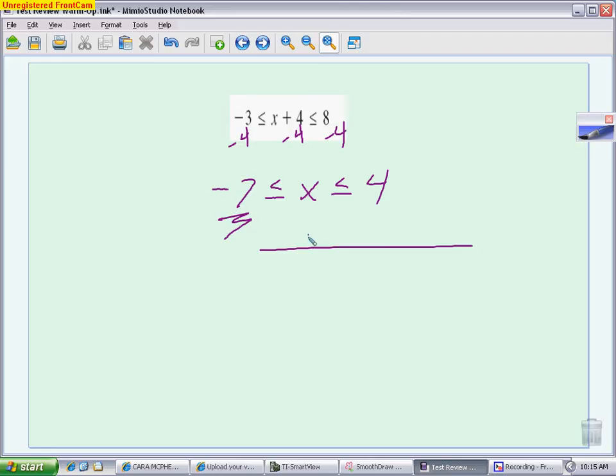When it comes to graphing, I don't need a really specific number line as long as you have the smaller number first. Make sure you have the right circles. In this case, we have the or equal to, so that means our circles are both closed circles, meaning it includes that number. It's possible to have one closed and one open, both closed, or both open. And I'm going to connect in between. This is saying any number between -7 and 4, including those values, would be a solution to the original inequality.